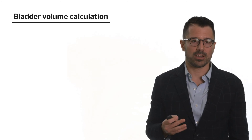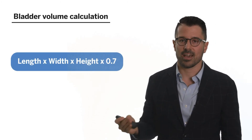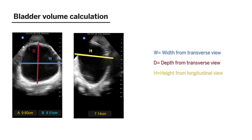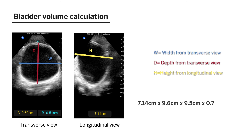To get a bladder volume, we calculate the product of length, width, and height, multiplied by a correction factor of 0.7. I get a still image of the bladder in the transverse plane and in the longitudinal plane, measure those three axes, and multiply by 0.7 to get an approximation of the volume of urine in the patient's bladder. I find this tends to be more accurate — at least anecdotally — compared to the amount of urine obtained after straight catheterization than the bladder scanners often used clinically, which lack the quality assurance of real-time live ultrasound.